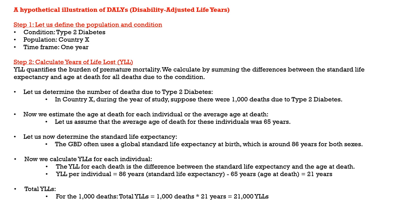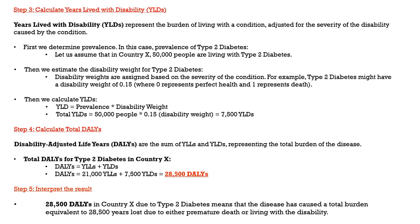In step 3, we want to estimate the burden of morbidity in the population — morbidity meaning the condition of being sick for a period of time. We calculate the years lived with disability. First we determine the prevalence of type 2 diabetes. Let us assume that in country X, 50,000 people are living with type 2 diabetes. Then we estimate the disability weight for type 2 diabetes — weights are assigned based on the severity of the condition, where 0 represents perfect health and 1 represents death. Let us say type 2 diabetes has a disability weight of 0.15. We then calculate years lived with disability as prevalence multiplied by disability weight.